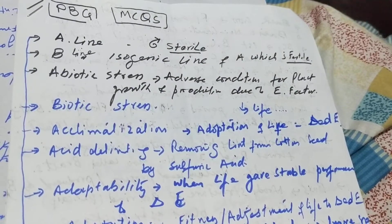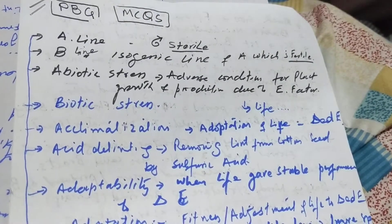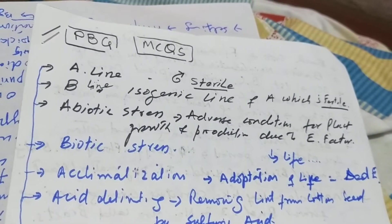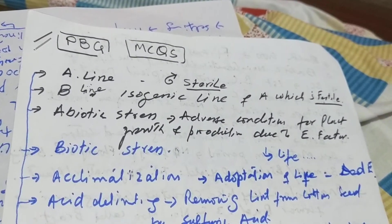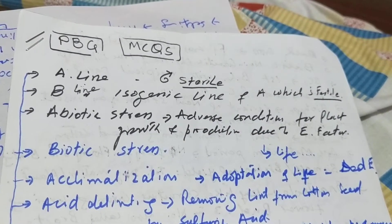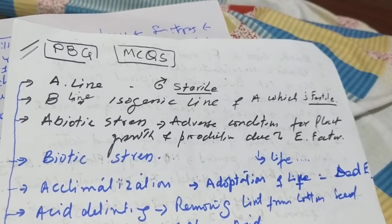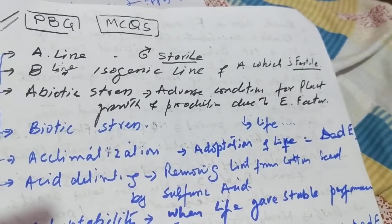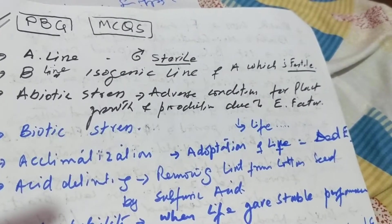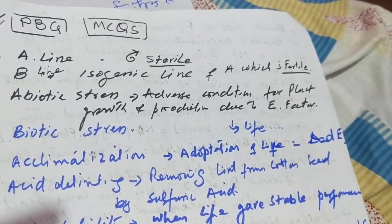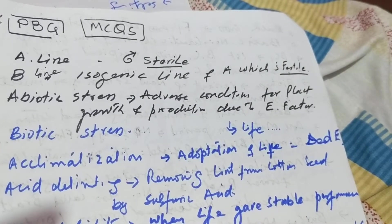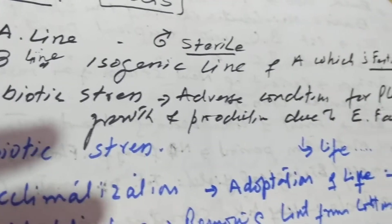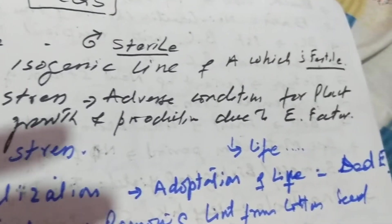This is Ever New with Word Inquiry and I am Tahir. Let's move towards plant breeding and genetics. Some definitions: A-line is the male sterile line, B-line is the isogenic line of A which is fertile, and abiotic stress is an adverse condition for plant growth.